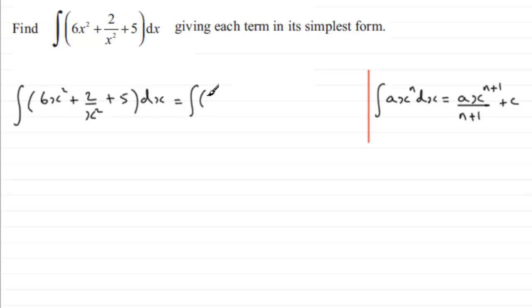I'm going to write this back in as 6x squared, but for this term we must think of 2 over x squared as exactly the same as 2 multiplied by 1 over x squared, and 1 over x squared is the same as x to the power minus 2 - a rule that we should be familiar with on indices. So we can change that term to plus 2x to the power minus 2, and then we've got our constant plus 5, and we're integrating all three terms with respect to x.